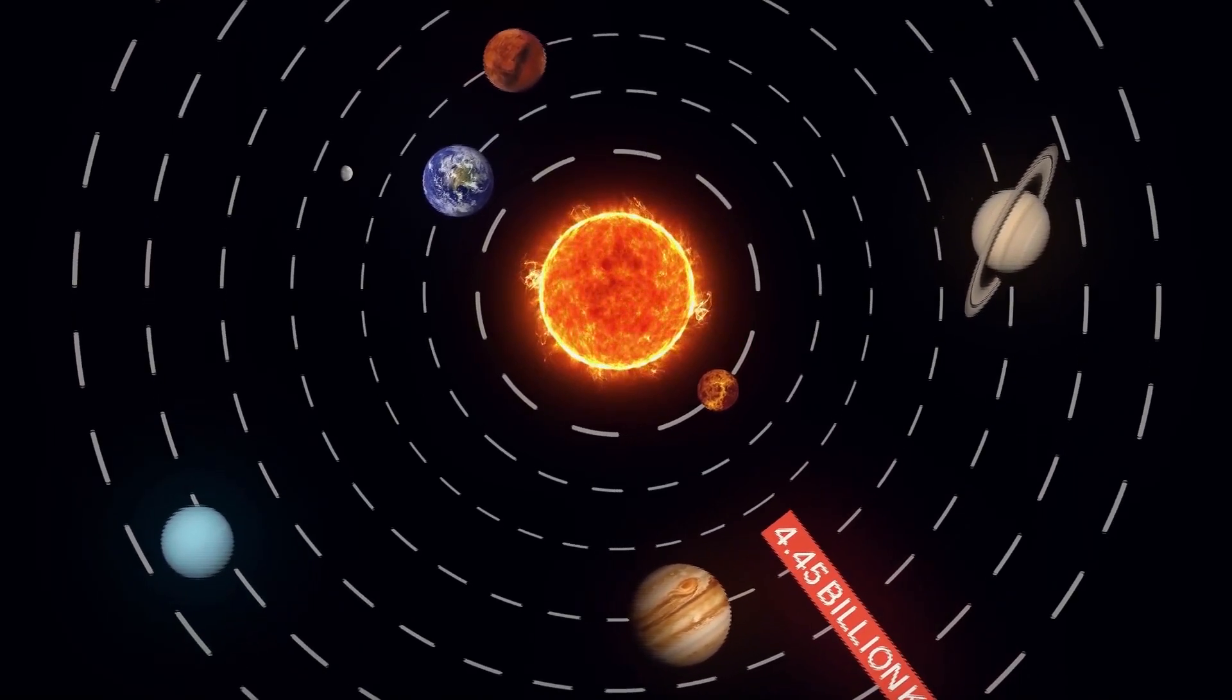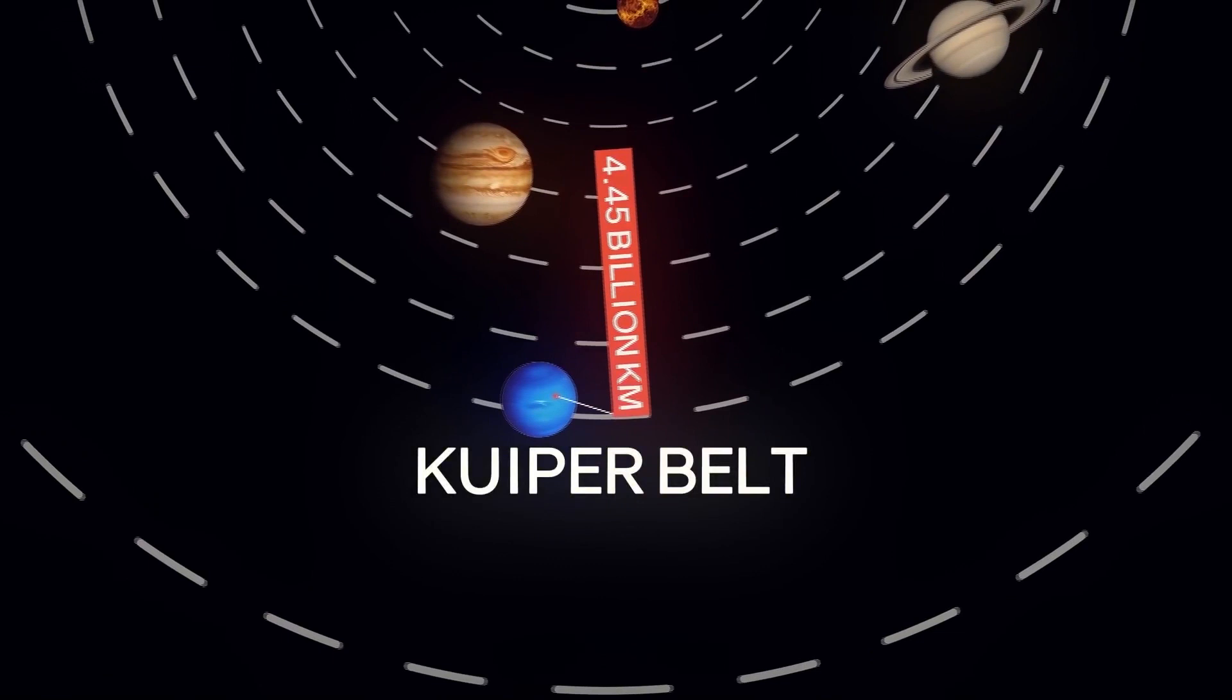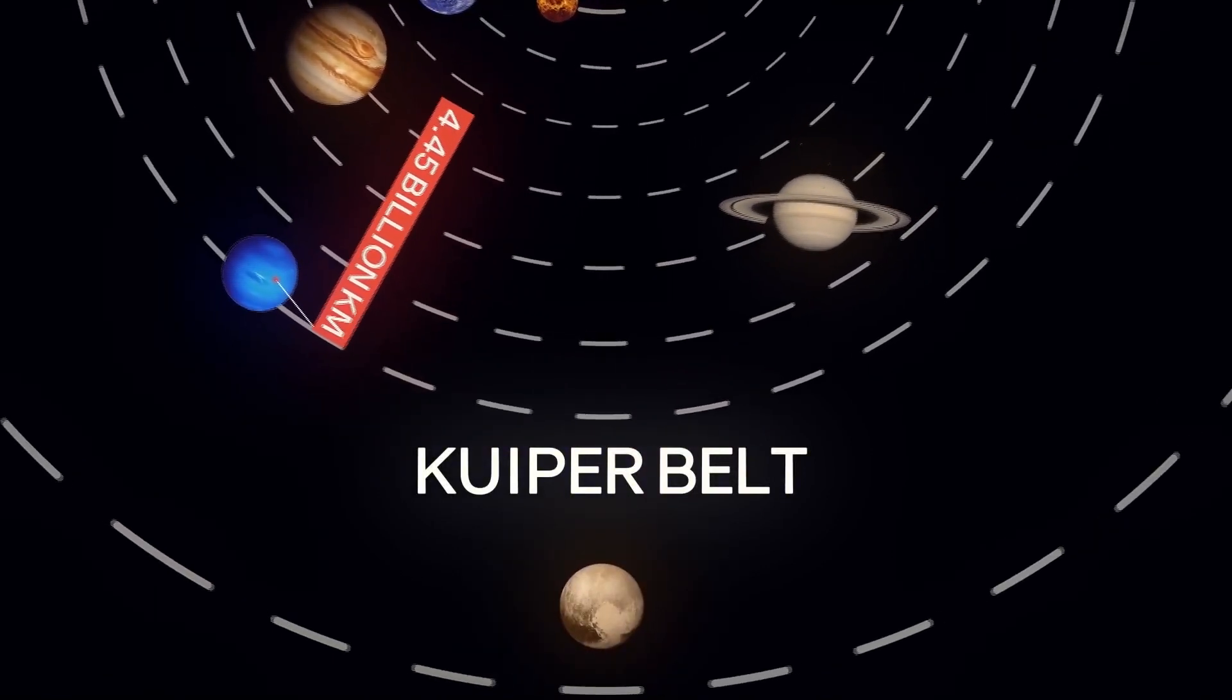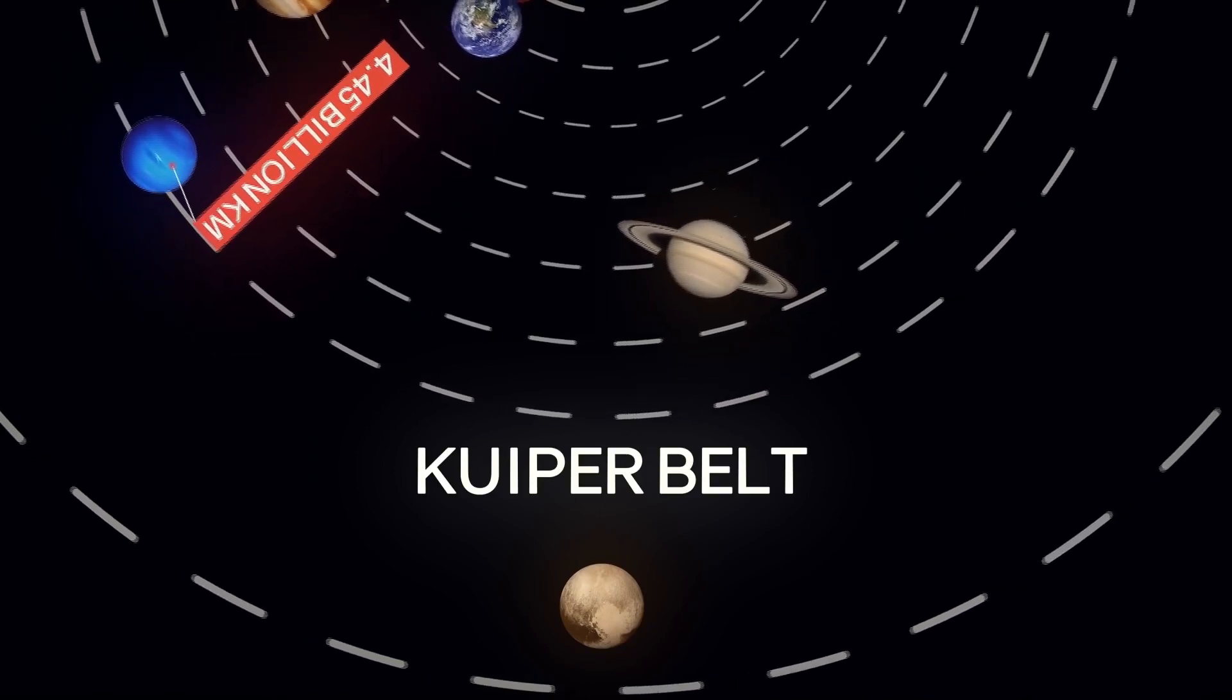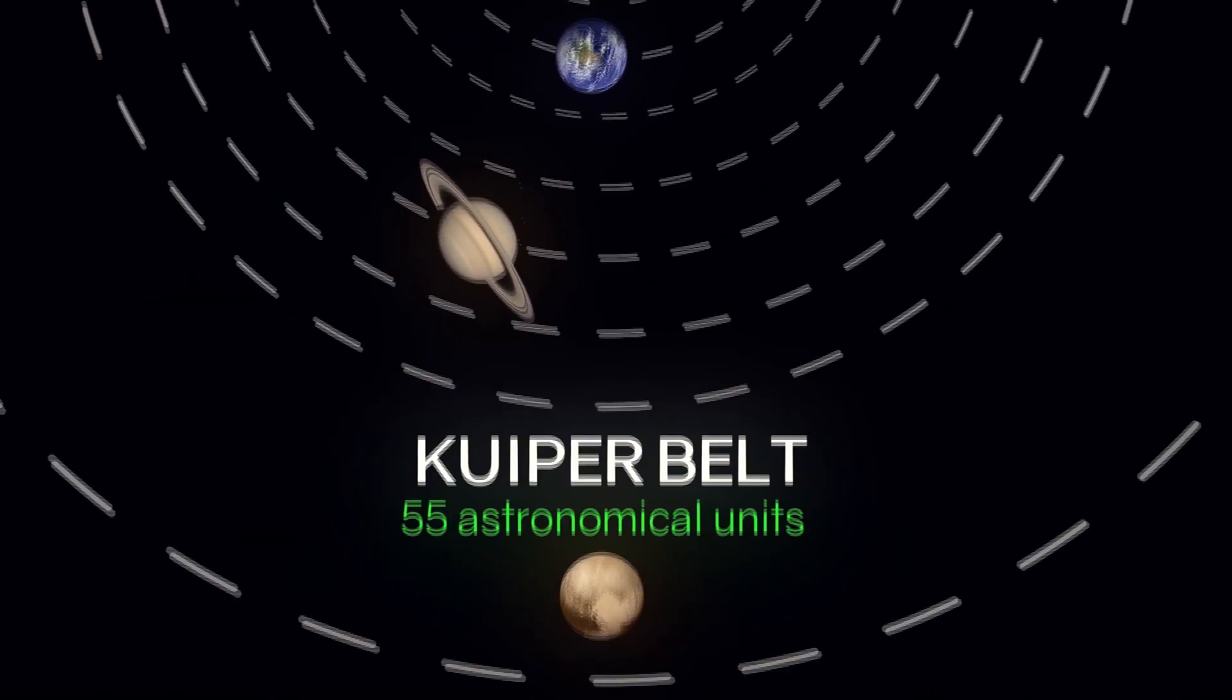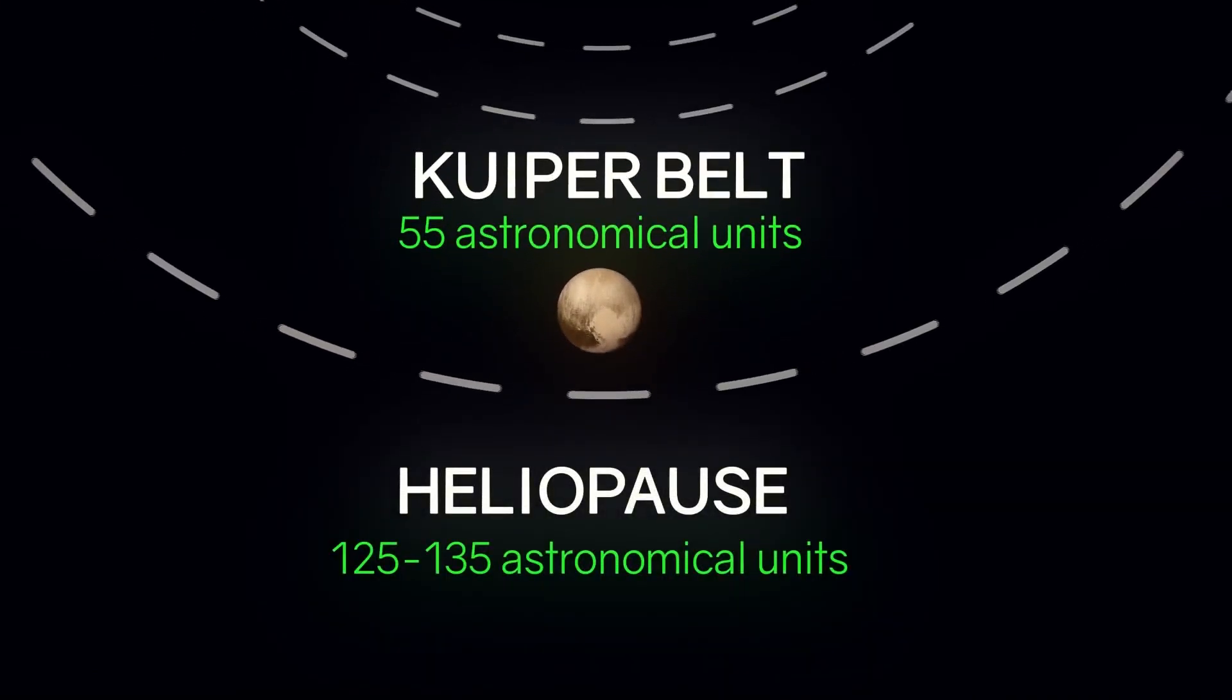The Kuiper belt, which lies behind Neptune, is a circle of tiny celestial bodies, the most renowned of which is Pluto, which has long been regarded as a planet. The Kuiper belt is about 55 astronomical units across. There is also a heliopause at a distance of 125 to 135 astronomical units, which we have already discussed.